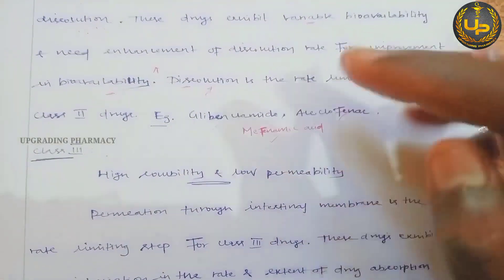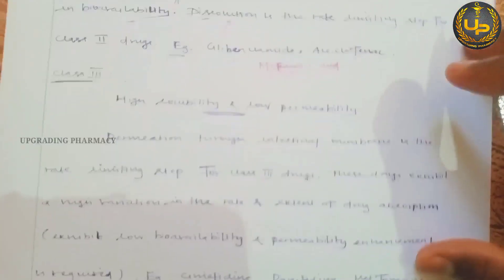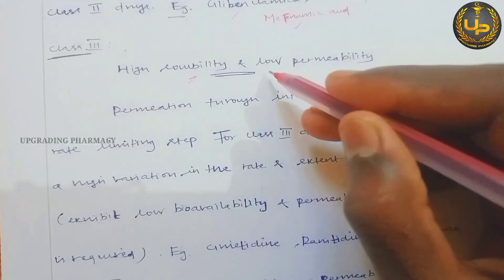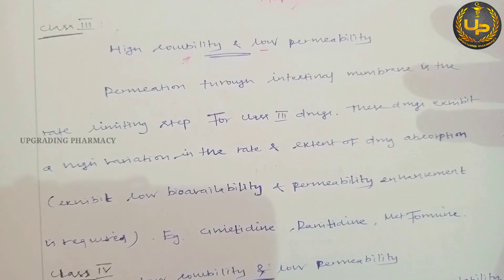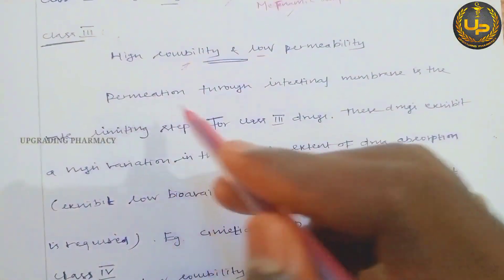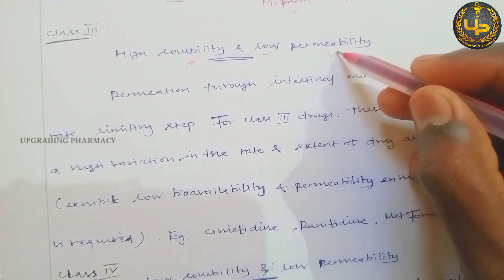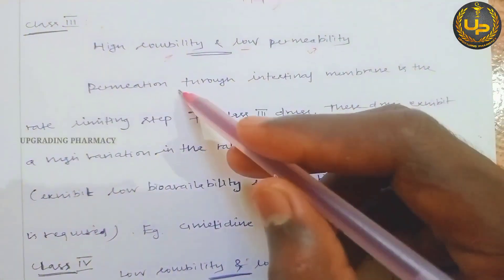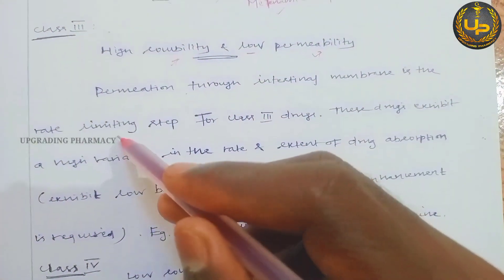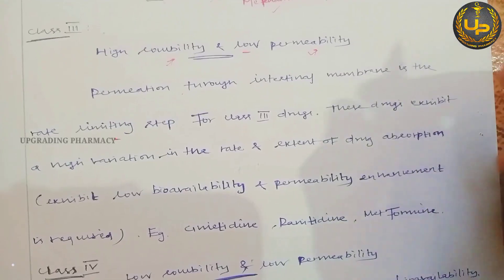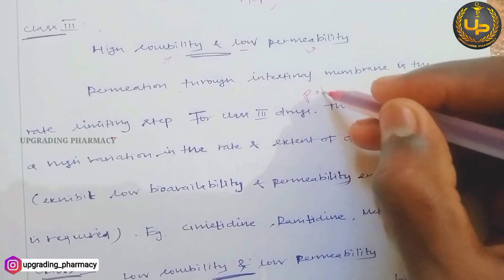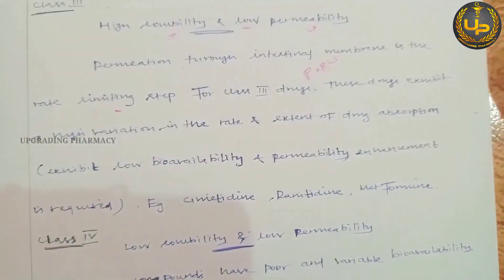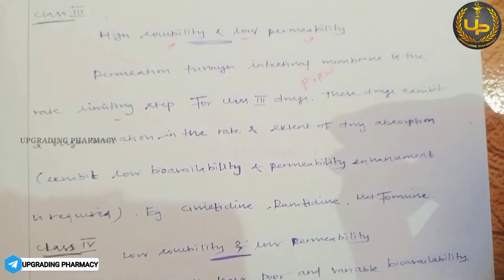To improve the bioavailability of Class 2 drugs, we need to enhance the dissolution rate. Examples of Class 2 drugs are diclofenac, mefenamic acid, and glibenclamide. Moving to Class 3 drugs — these have higher solubility but low permeability. They are mainly hydrophilic, so easily soluble, but have low permeability because they do not pass through the cell membrane easily. Permeation through the intestinal membrane is the rate-limiting step.